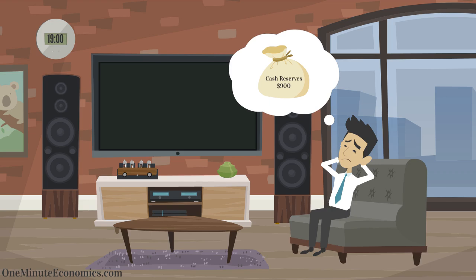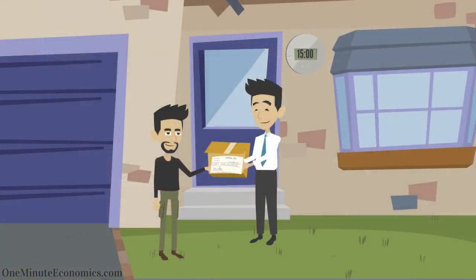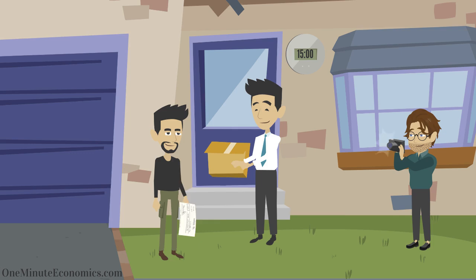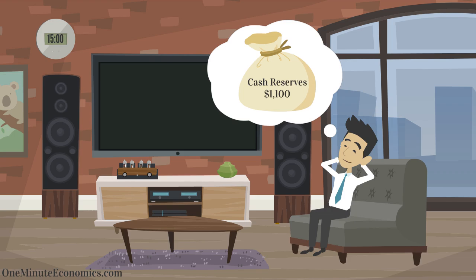The same way, John will receive his paycheck tomorrow at 3 pm, of which he sets aside $200 each month as cash reserves. As such, if we take a snapshot of his bag tomorrow at 3 pm, the value will be $1,100.